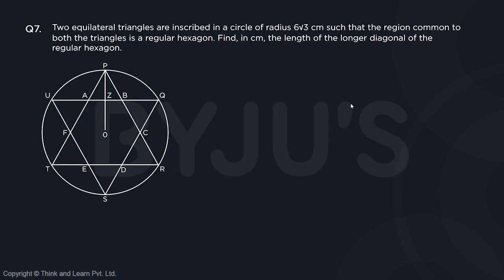Question number 7. Two equilateral triangles are inscribed in a circle of radius 6 root 3 centimeters such that the region common to both the triangles is a regular hexagon. Find in centimeters the length of the longer diagonal of the regular hexagon.